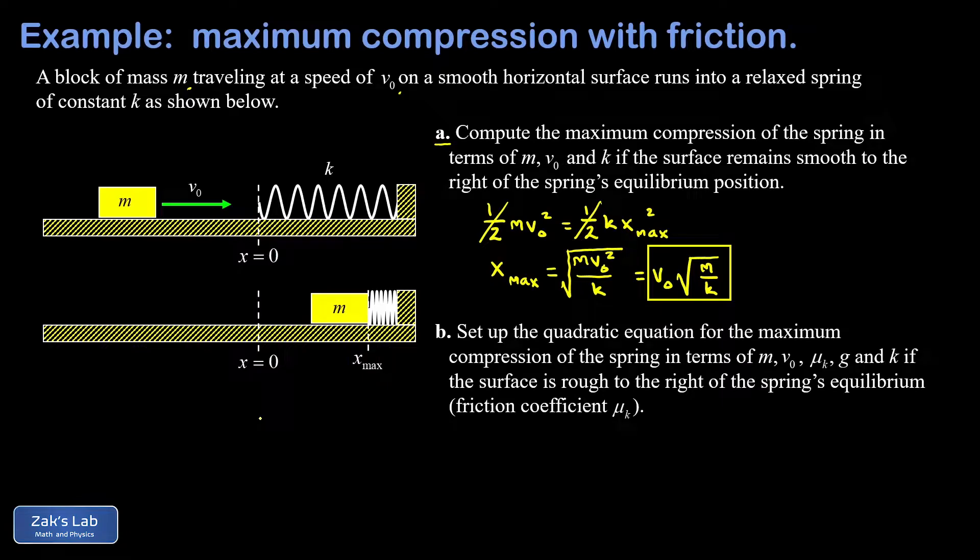Part b is where the problem gets tricky. So now we're adding a coefficient of kinetic friction that doesn't turn on until we hit the tip of the spring. In other words, the surface is rough to the right of the equilibrium position for the spring. Now we're trying to find a quadratic equation for the maximum compression of the spring in terms of all the parameters of the problem.